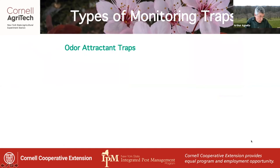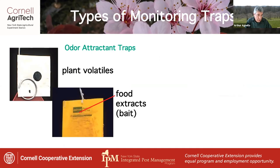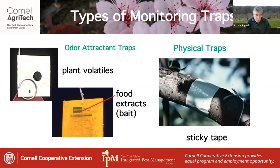Some traps contain odor attractants. These can be plant volatiles, such as fruit esters for apple maggot, as in this little pouch. Or they can be food extracts used as bait, like ammonium hydrolyzate, also used for apple maggot. And some traps work by physically getting in the way of the insect — this is a double-sided sticky tape trap used to catch San Jose scale crawlers.